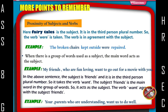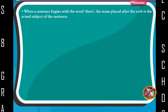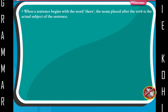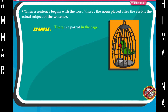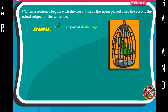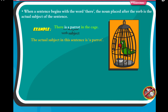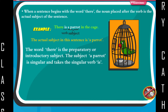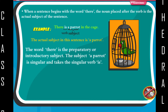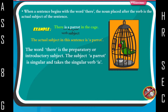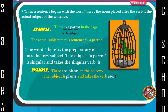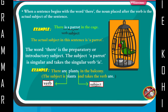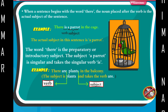Example: Your parents, who are understanding, want us to do well. When a sentence begins with the word 'there', the noun placed after the verb is the actual subject of the sentence. Example: There is a parrot in the cage — 'is' is the verb, 'a parrot' is the subject. The actual subject is 'a parrot'; the word 'there' is the preparatory or introductory subject. The subject 'a parrot' is singular and takes the singular verb 'is'. Example: There are plants in the balcony — the subject is 'plants' and takes the verb 'are'.